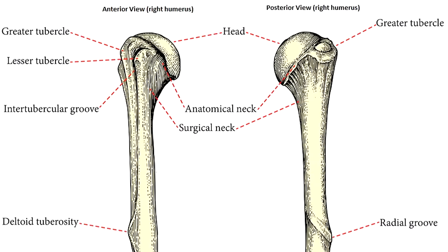Here we're looking at the humerus from the right arm. The picture on the left is from the anterior or front view of the right arm, and on the right we have this bone flipped around so you can see the back of it, or the posterior view of the right humerus.